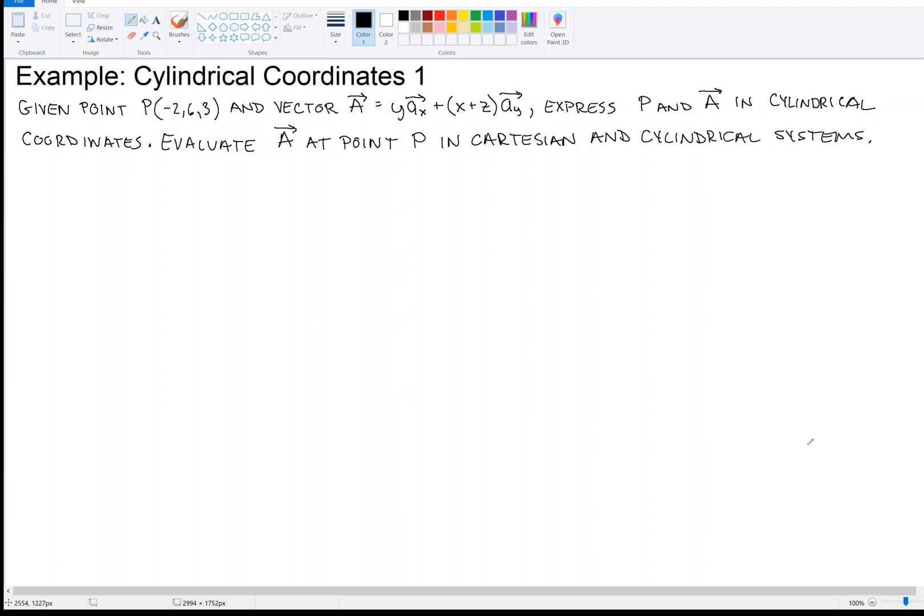I've got an example here of cylindrical coordinates. Given point P is (-2, 6, 3) and vector A, which is yax + xay + zay, express P and A in cylindrical coordinates, evaluate the vector at point P in Cartesian and cylindrical systems.